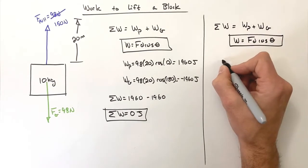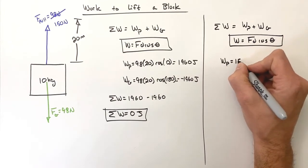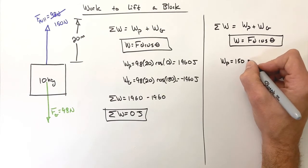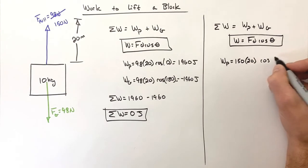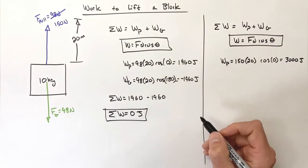So let's take a look at the pull force first. This time around we have 150 newtons upward acting over a displacement of 20 meters upward, and the angle between them again is still zero degrees. We haven't changed the direction of force, just the magnitude. This is going to result in 3000 joules of work being done upward.